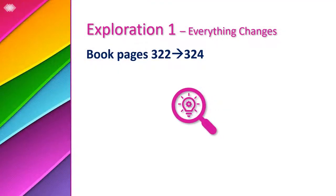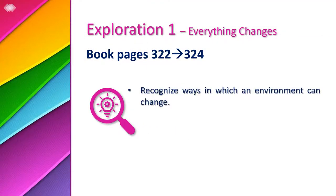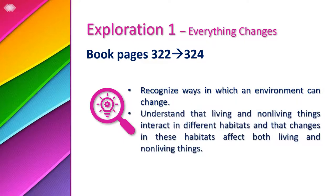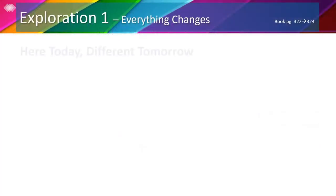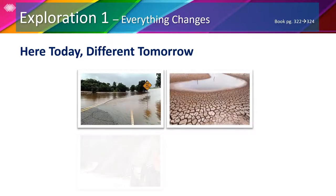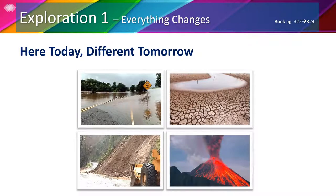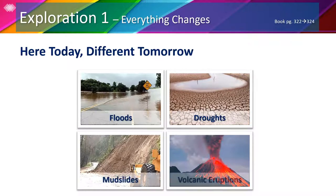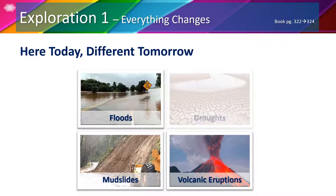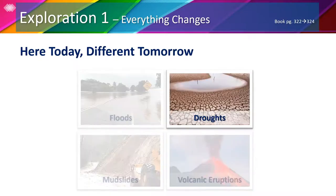In Exploration 1, we will recognize ways in which an environment can change. We're going to understand that living and non-living things interact in different habitats and that changes in these habitats affect both living and non-living things. Some changes to environments happen quickly, others happen slowly over a period of time. Some of these changes are floods, droughts, mudslides, and volcanic eruptions. Floods, mudslides, and volcanic eruptions happen quickly, but droughts take time to happen.